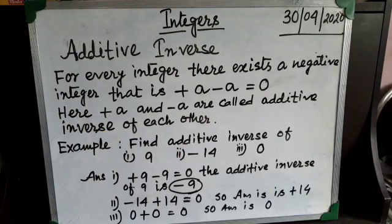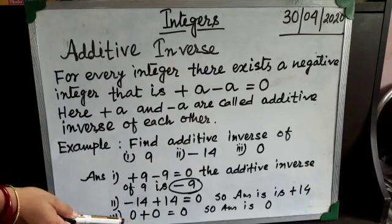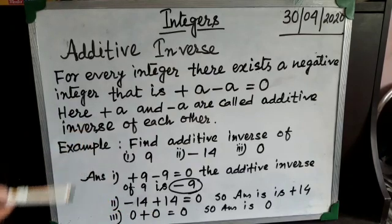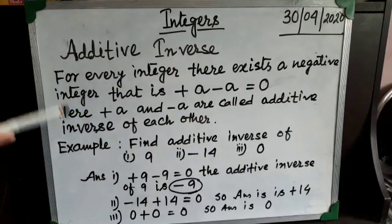And the third example is what is the additive inverse of 0? As all of you know, if we add another 0 with it, the result becomes 0 only. That means the additive inverse of 0 is 0 itself.